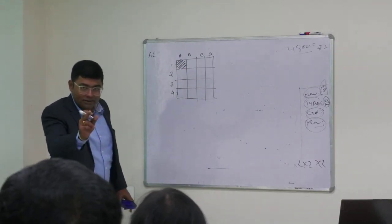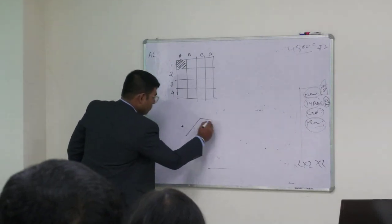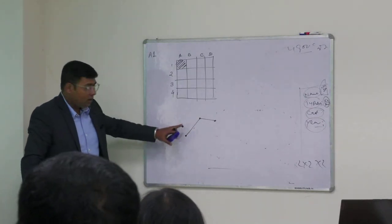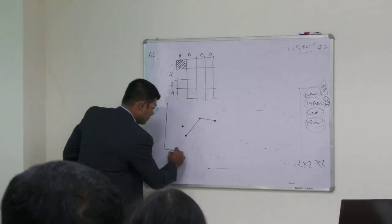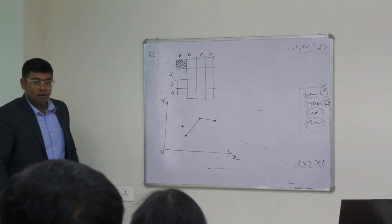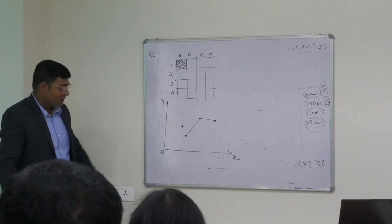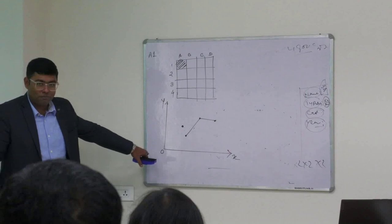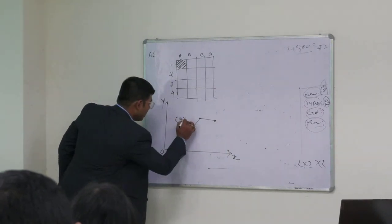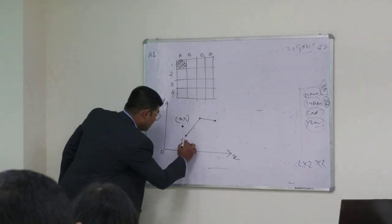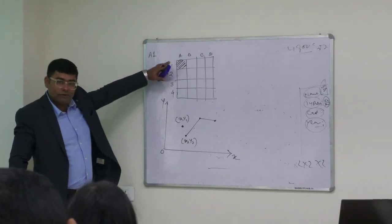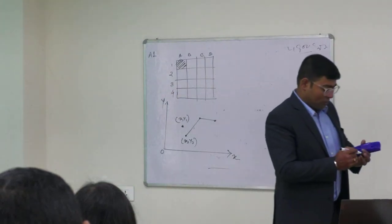For vector data, we use X and Y coordinates. Suppose this is a point feature, and a line is a combination of points. In vector data, the origin is at the bottom-left. So a particular point would be given as x1, y1, another as x2, y2, and we start measuring from the bottom-left. This is the basic difference between raster data and vector data in terms of their coordinate origin.